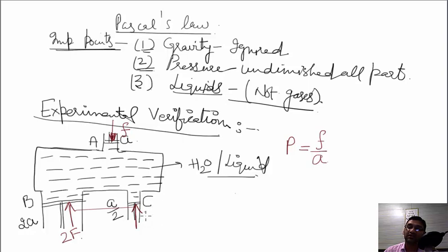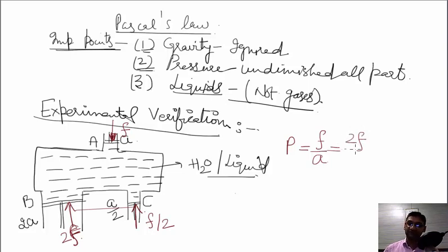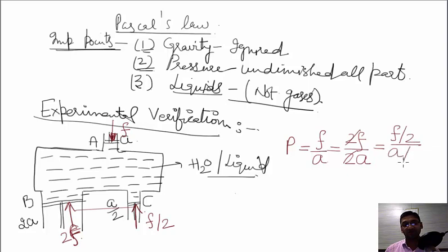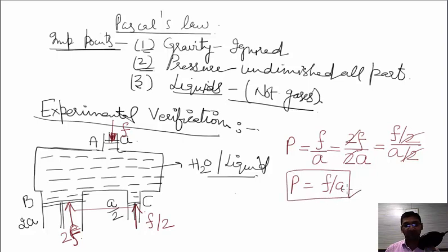For piston C, the force required is F by 2. Note: the symbol used is small f. The force varies: 2F acts on B because its area of cross-section is 2A, so pressure equals F/A, and 2F/2A = F/A. Similarly, for piston C, force is F/2 because area is A/2, so F/2 divided by A/2 again gives F/A. The pressure transmitted equally to all three pistons is F/A.